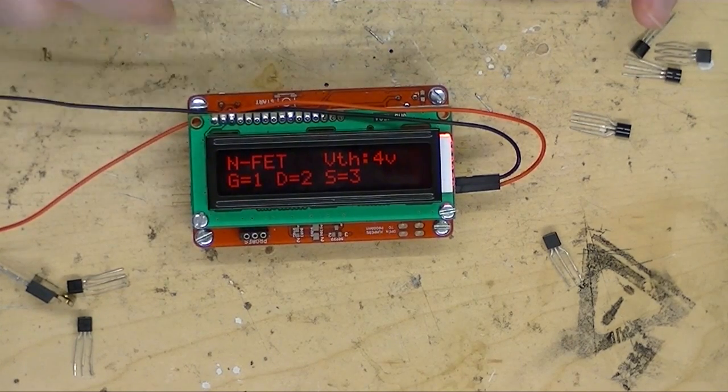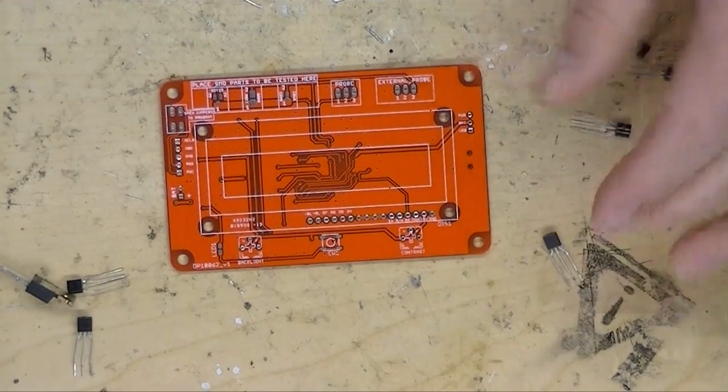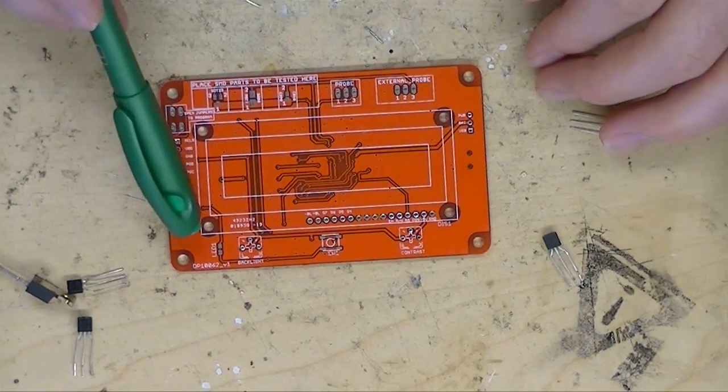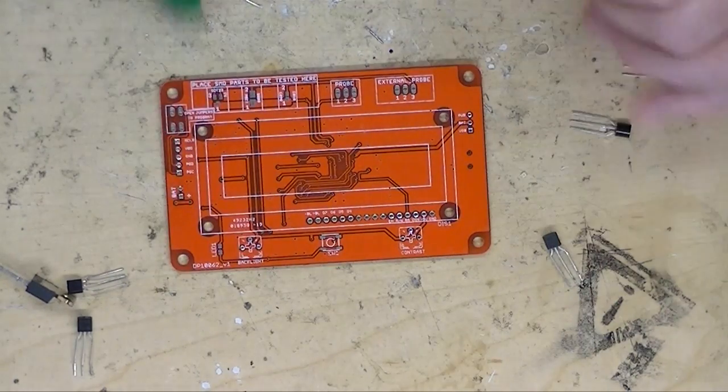This is just version 1 of the tester. We've already updated to a new revision. The circuit board looks like this. As you can see, it's a much bigger circuit board, which gives more areas for breakouts.